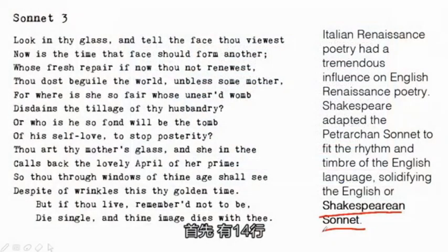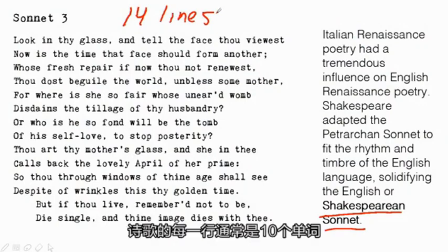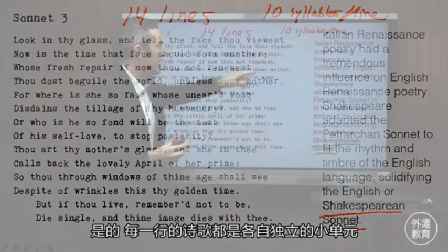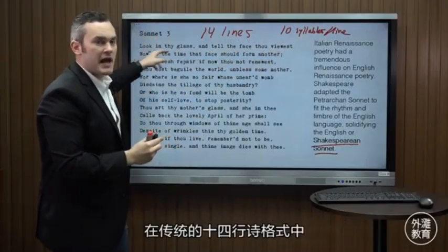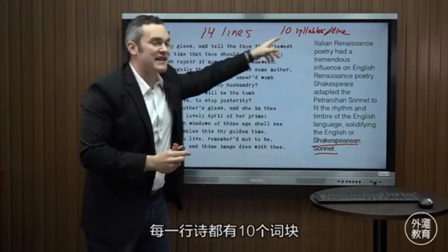So a sonnet, first of all, is always 14 lines — and indeed, if we count, we have 14 lines here. A sonnet also always has 10 syllables per line. Every line of a poem is its own unit, and in the traditional sonnet form, every line has 10 syllables.